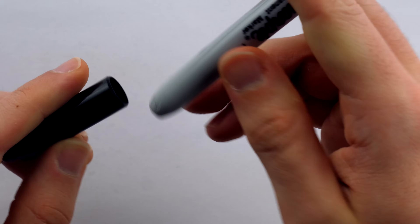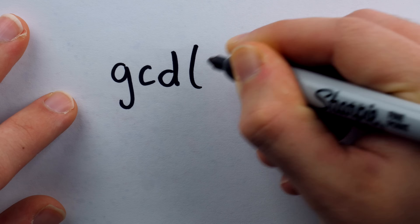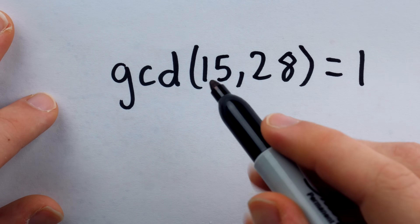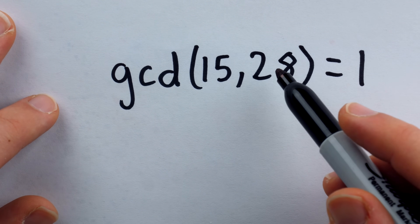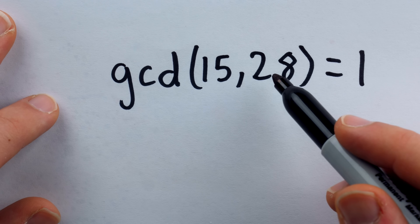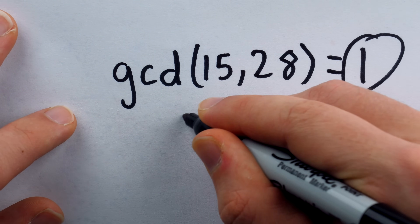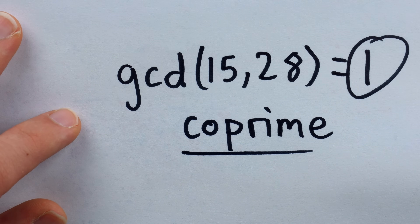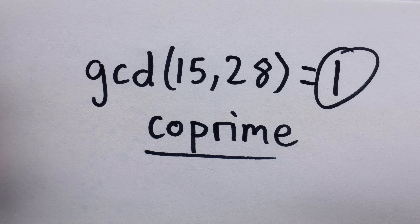To be relatively prime means that the two numbers have no common factor greater than 1. For example, the greatest common divisor of 15 and 28 is equal to 1. 15 has factors of 1, 3, 5, and 15, and 28 has factors of 1, 4, 7, 14, and 28. Their greatest common factor is 1, so we would say that 15 and 28 are relatively prime — also called co-prime. Notice, two numbers don't have to be prime for them to be relatively prime.